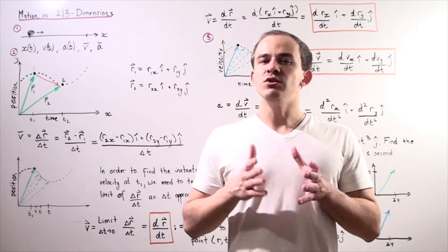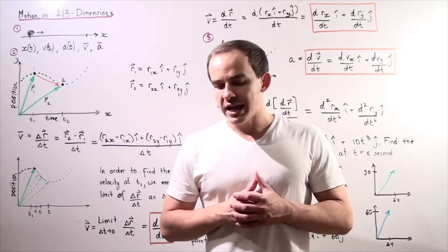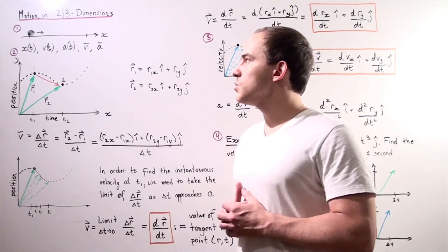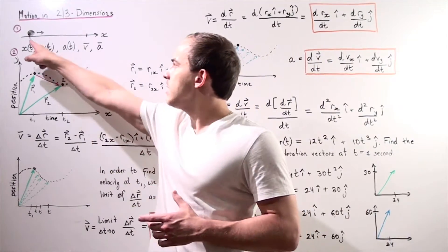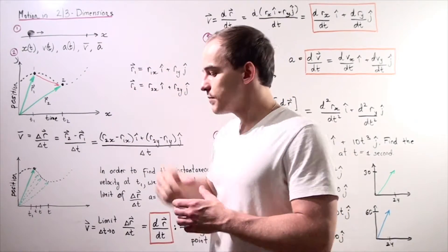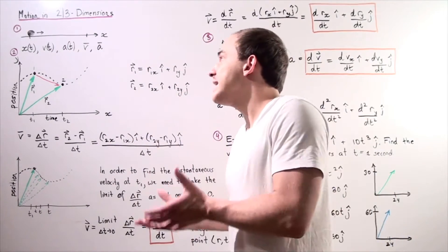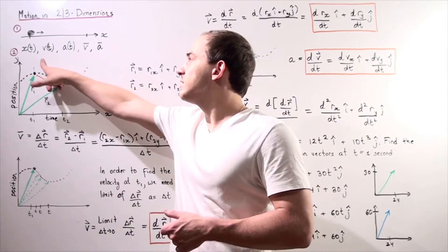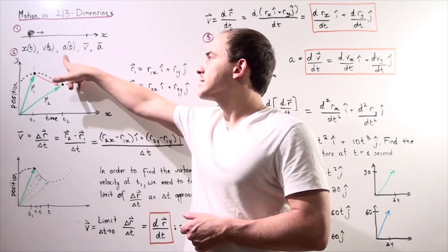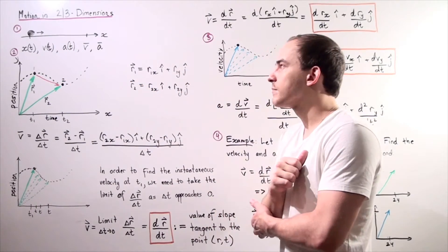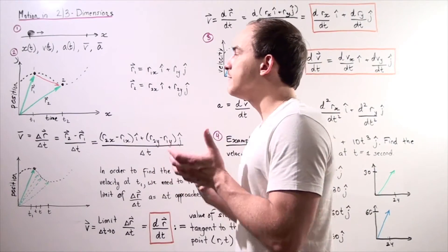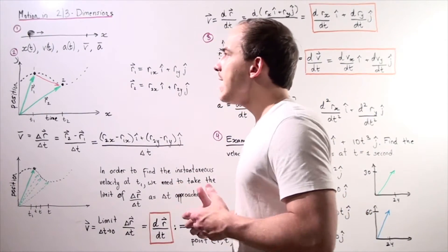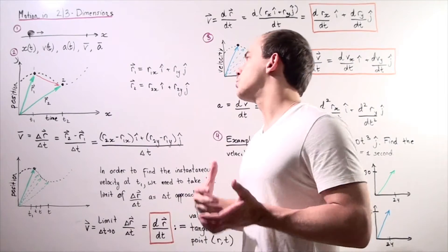Let's recall motion of objects in one dimension. Let's suppose we have a ball that is rolling along the x-axis in one dimension. Suppose our ball begins at some initial position and ends at some final position. We can talk about the ball's displacement, average velocity, or average acceleration, as well as the ball's instantaneous velocity and instantaneous acceleration with respect to time. Whenever we're adding and subtracting vectors in one dimension, things are relatively simple because all we require is to take the algebraic sum and algebraic difference.